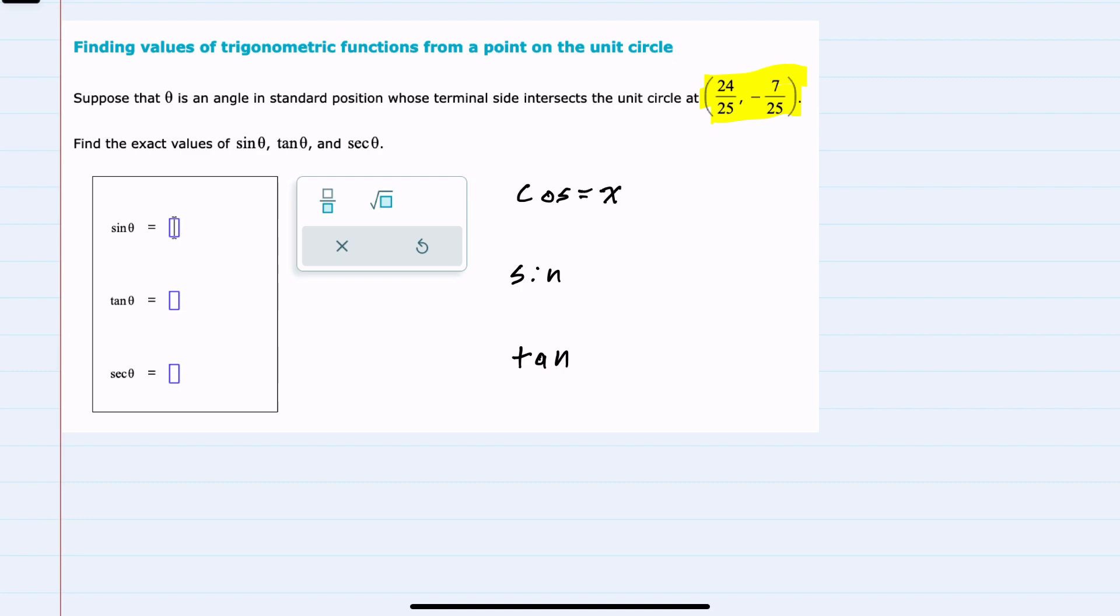The cosine is just our x value, so in this example it would be 24/25. Sine is our y value, so in this example negative 7/25.